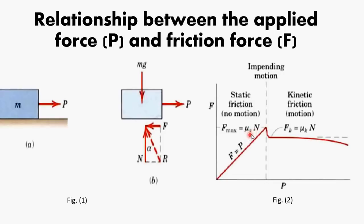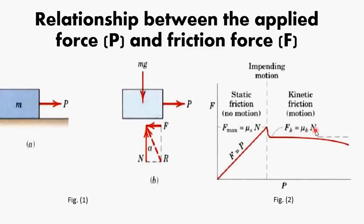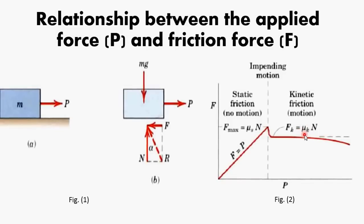The maximum static frictional force is calculated from the formula F_s_max = μ_s × N, where μ_s is the coefficient of static friction and N is the normal reaction. When we have motion, the frictional force is called F_k, or kinetic frictional force, calculated from the formula F_k = μ_k × N, where μ_k is the coefficient of kinetic friction.